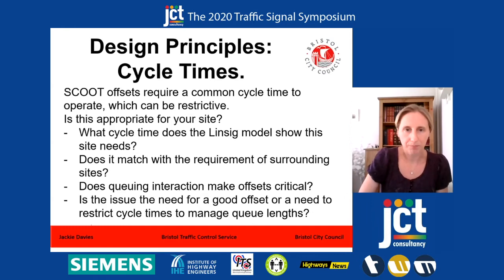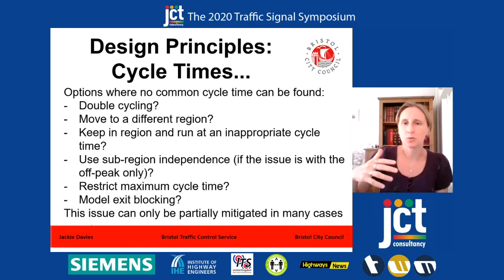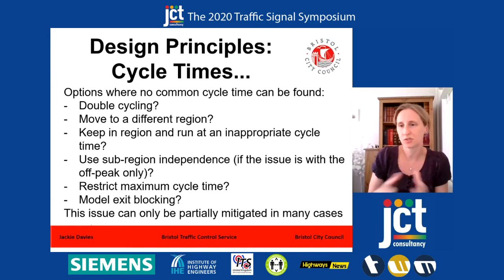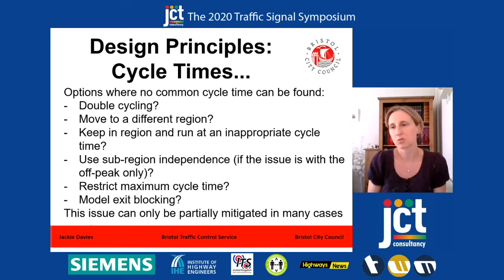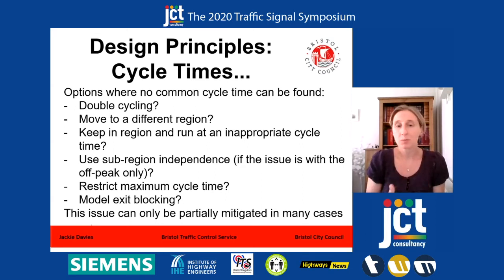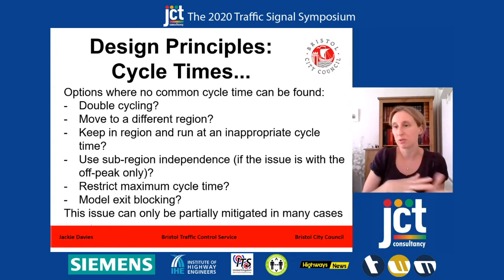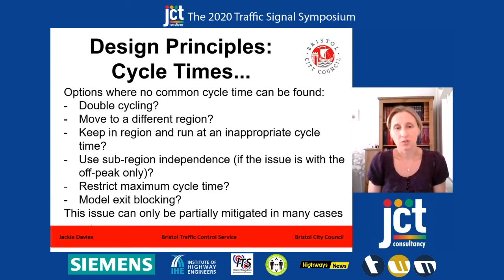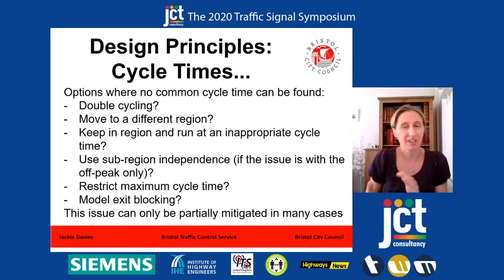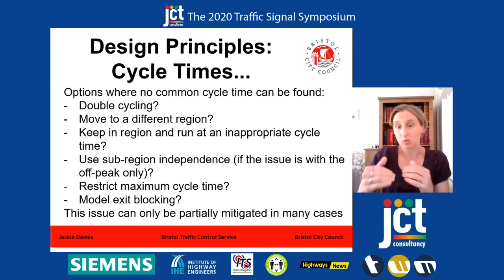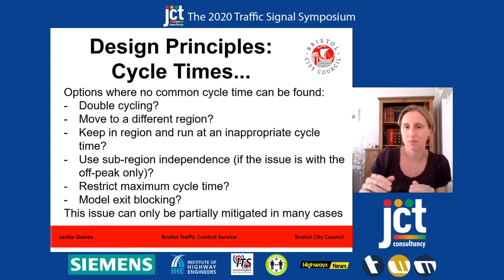There's a lot of things to consider. When you can't get a common cycle time because your junction designs conflict, there are options. You can do things like double cycling your sites — this works really well with pedestrian crossings next to junctions. You might be able to move your site into a different SCOOT region; if it's on the edge of two regions, you might be able to get offsets to one region but not the other.